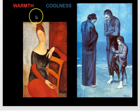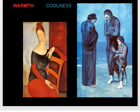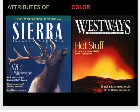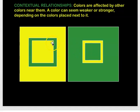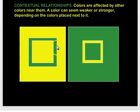Here are two paintings still working with color — you can see warm colors and cool colors. The artist who painted this was Pablo Picasso. You can also see warm and cool colors used in advertising. Colors can affect colors next to them, making them seem weaker or stronger. Sometimes the same color will look a little darker or slightly different depending on what color is placed next to it.